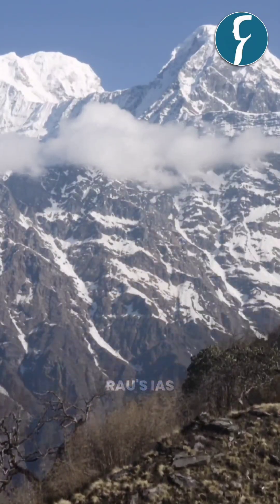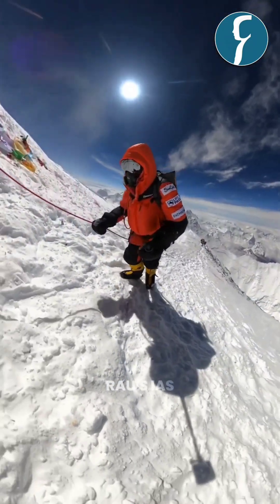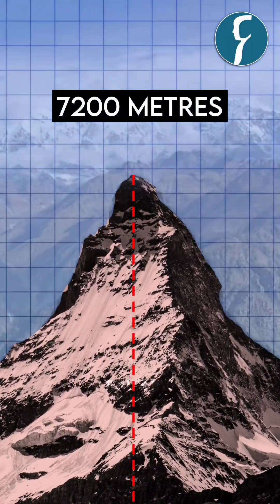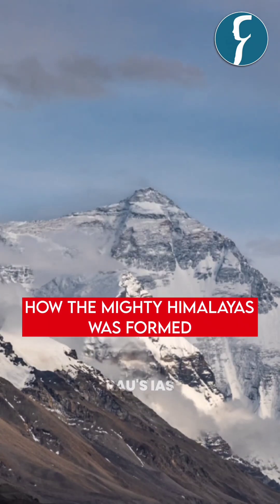There are no taller mountains than the mighty Indian Himalayas. It has some of the Earth's highest peaks and it has 100 peaks which are greater than 7200 meters. Let's learn how the mighty Himalayas were formed.